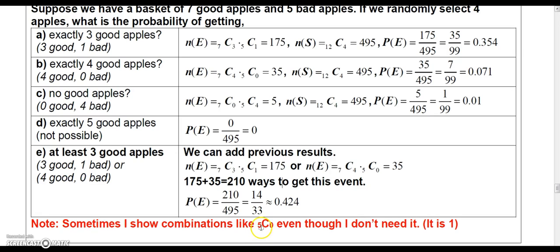So, like I said, sometimes something like 5 choose 0, you don't really have to write it, but I like to write it just to show you that we're selecting none of that particular type. Okay, so I'll show you a set of practice problems in the next video on probability. Thank you.